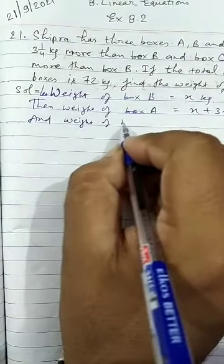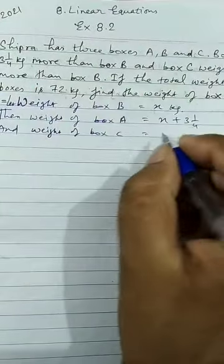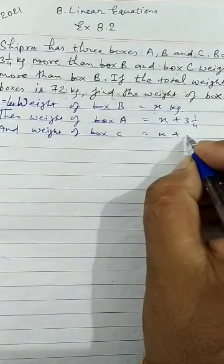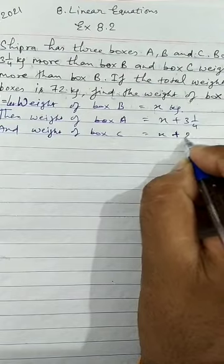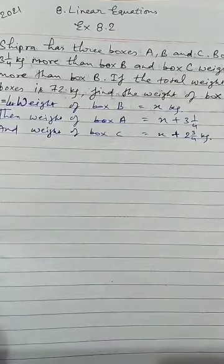And weight of box C is 2 and 3 upon 4 kg more than B. So it is X plus 2 and 3 upon 4 kg.